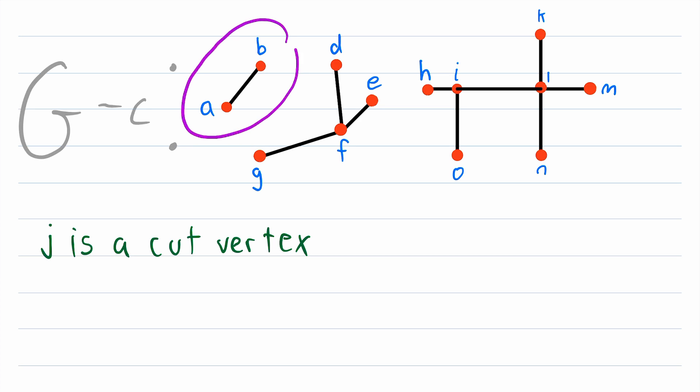So now what we are looking at is the graph G minus the vertex C. And we can see that this graph after deleting C has one, two, three components. So we say that C is a cut vertex.